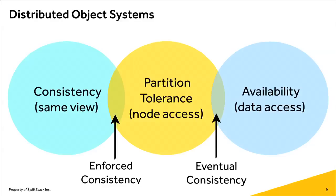When solving distributed problems, you've got a choice to make. You can do one of two things. You always have to handle some degree of failures — what happens if a network connection dies or something times out. The question is: do you go for something that's strongly consistent, where the entire system has the exact same view of the data at all times? Or do you relax that a little bit, not needing the answer right now but knowing you'll get it, while always being able to respond to requests? This is summed up in the CAP theorem. In a distributed system you have to choose two of these things and can't sacrifice partition tolerance — you must choose between an eventually consistent system and a strongly consistent system.